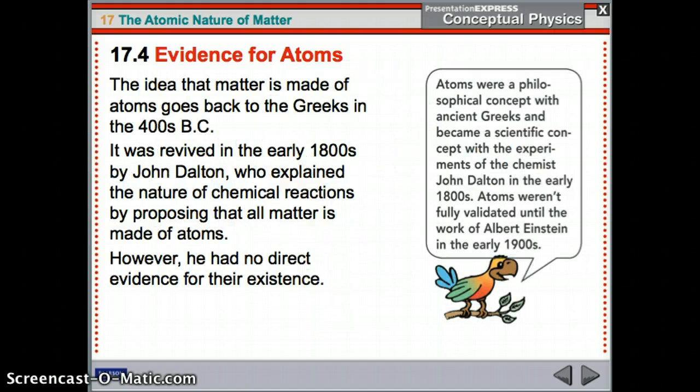All right, so the idea that matter is made of atoms goes all the way back to 400 BC. That's a long time ago. But it wasn't really developed until the 1800s by a guy named John Dalton, who said he did a bunch of chemistry and said, hey, I think everything's made of atoms. But he didn't really have evidence. That was just the conclusion that he drew. And then it wasn't until the 1900s that Albert Einstein did a lot of work and was able to prove that atoms did exist.